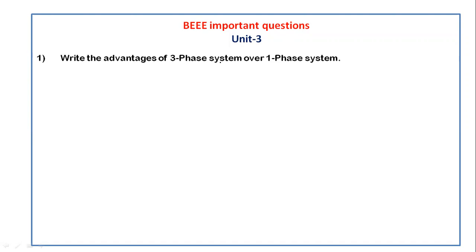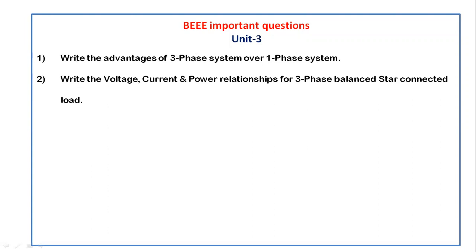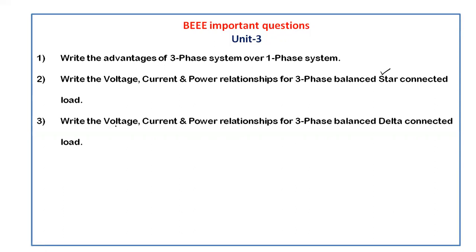In unit 3, the first question is: write the advantages of the three-phase system over a single-phase system. Next, write the voltage, current, and power relationships for a three-phase balanced star connected load, and similarly for a three-phase balanced delta connected load.